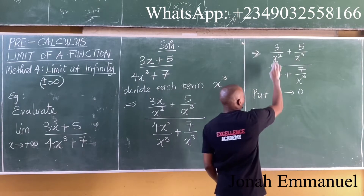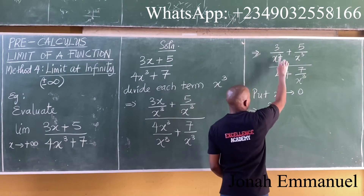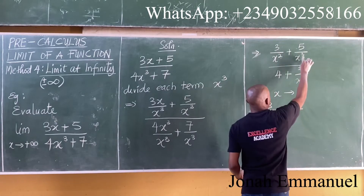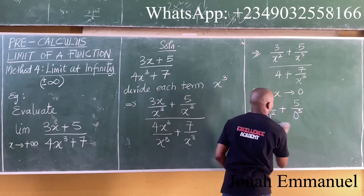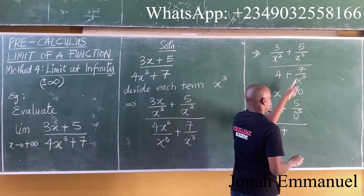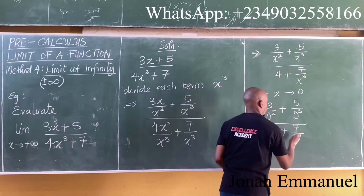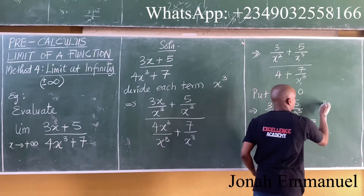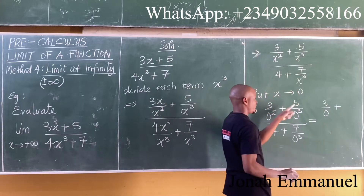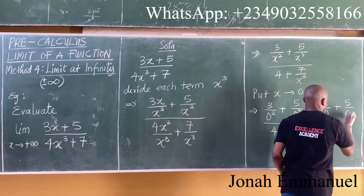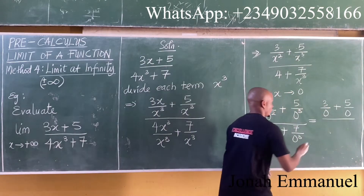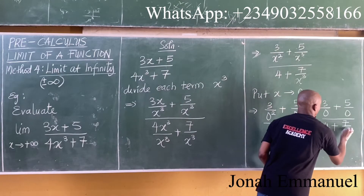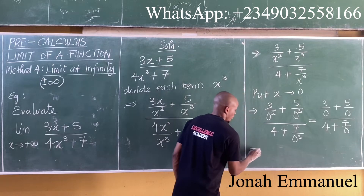From here, this will give you 3 all over 0 squared, plus 5 all over 0 cubed, all over 4 plus 7 all over 0 cubed. So this will now be equal to 3 over 0 plus 5 over 0, all over 4 plus 7 over 0.